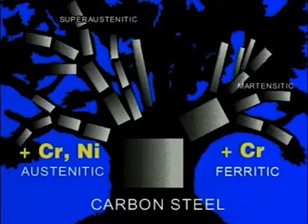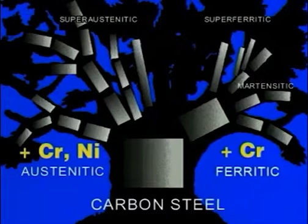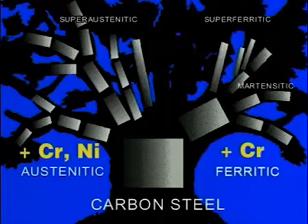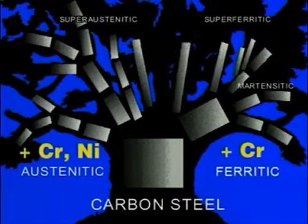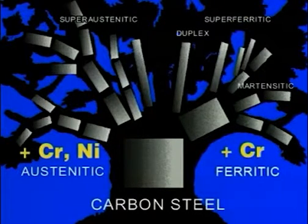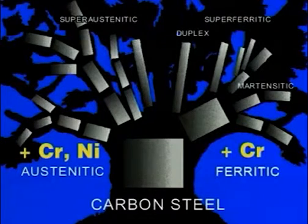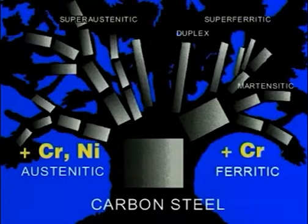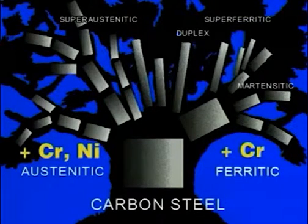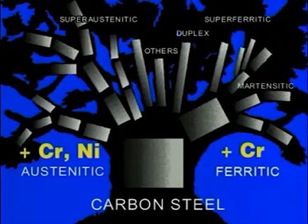There are also special ferritic steels. For instance, low-carbon, high-chromium steels containing molybdenum and niobium or titanium combine excellent corrosion properties with reasonable toughness and weldability. As the name implies, duplex steels contain both austenite and ferrite, giving them a combination of good corrosion resistance and good tensile properties. There are many other specialist stainless steels for specific applications, but they all have a place in the stainless steel family tree.